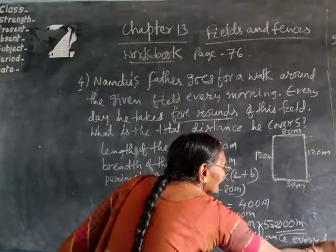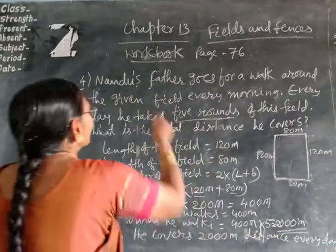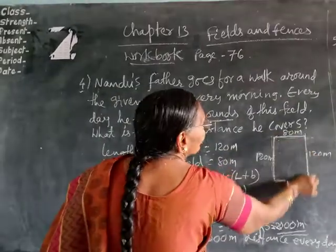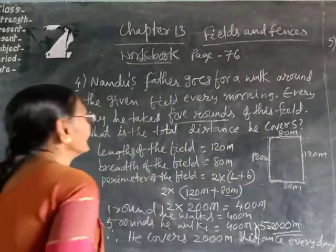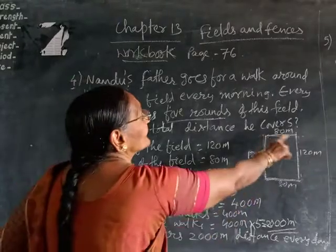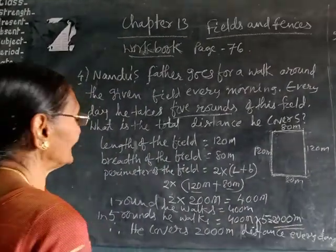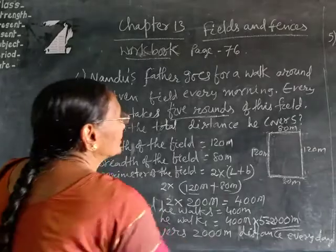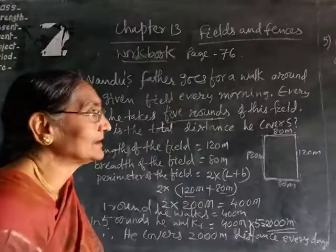Understand or not? Nandu's father goes to walk around this field and 5 times he is walking every morning. So how much distance does he cover? He covers 2000 meters of distance every day.